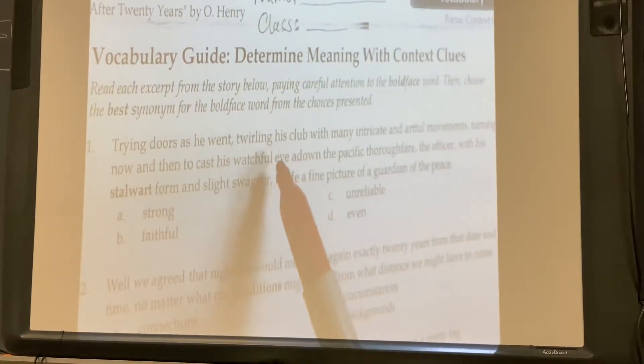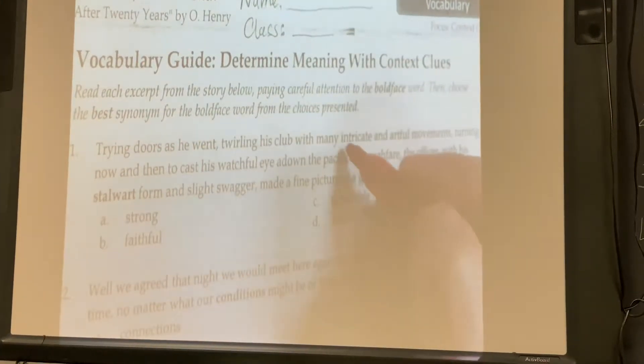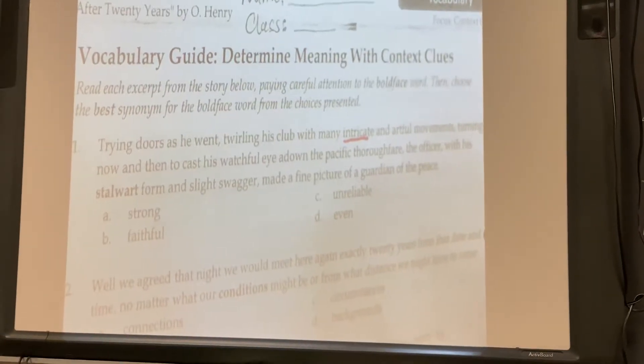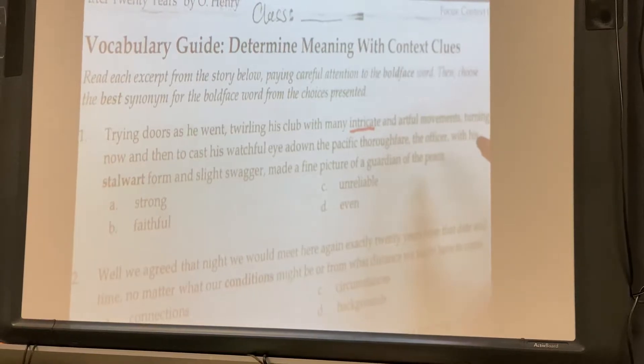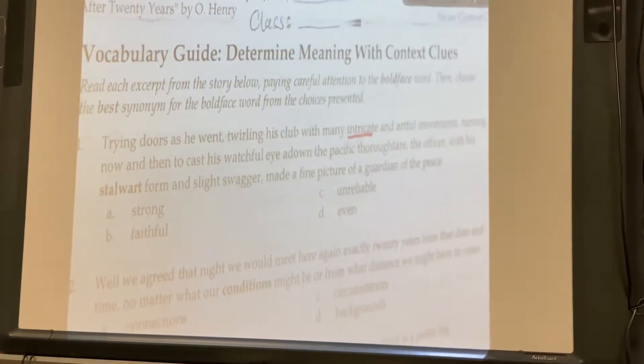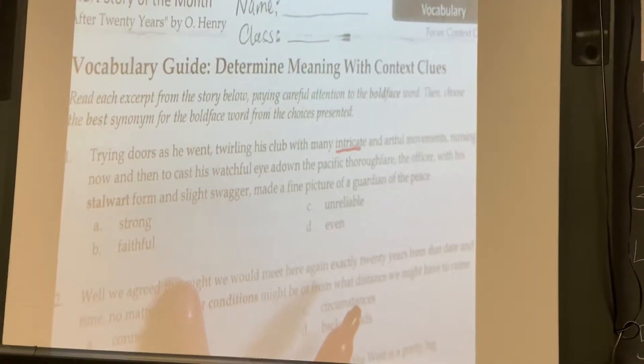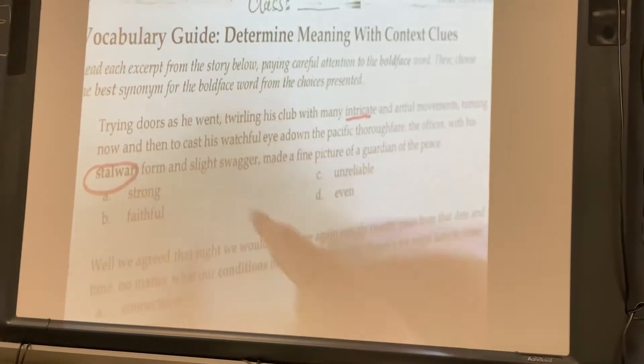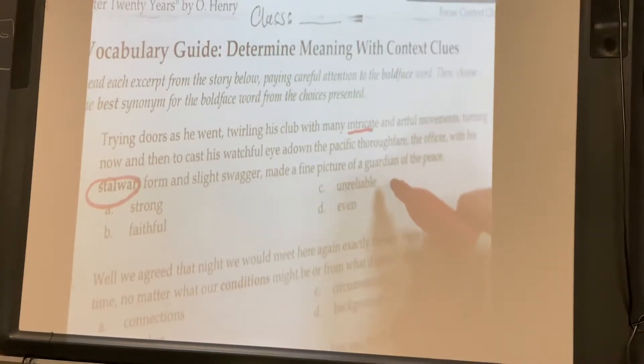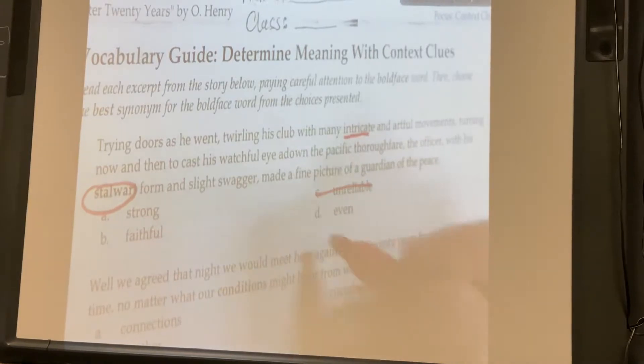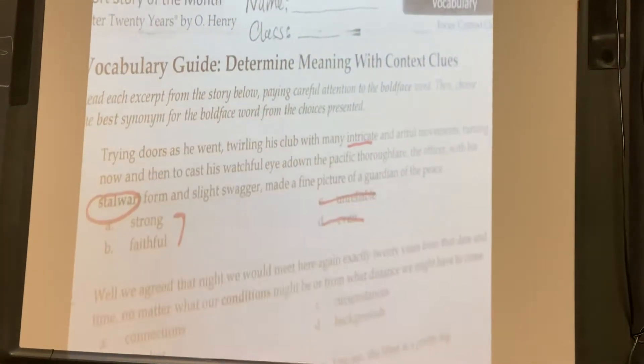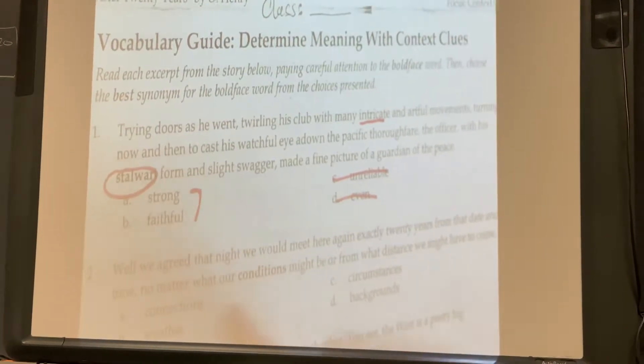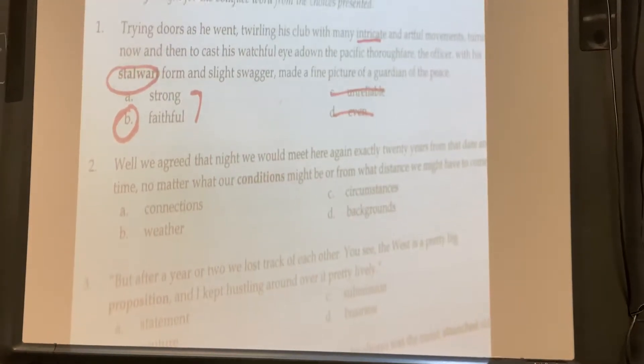One: Trying doors as he went, twirling his club with many intricate, that is a vocabulary word, and artful movements, turning now and then to cast his watchful eye adown the Pacific thoroughfare. The officer, with his stalwart form and slight swagger, made a fine picture of a guardian of the peace. So you are supposed to find the word that means stalwart. So I know that unreliable is the opposite. I'm going to cross that out. Even does not make sense. So I'm kind of going between strong and faithful. And really, stalwart means loyal, reliable, hardworking, so I'm going to pick faithful for my answer. So number one is B, faithful.